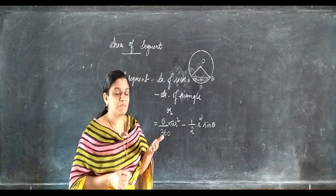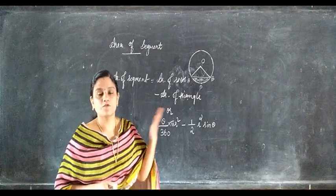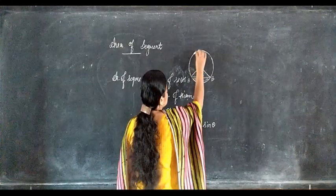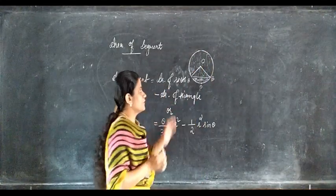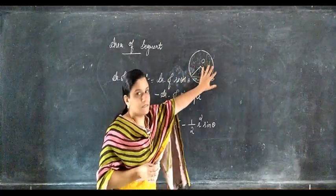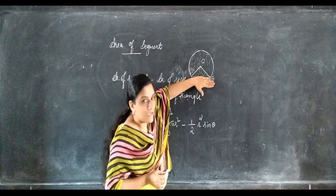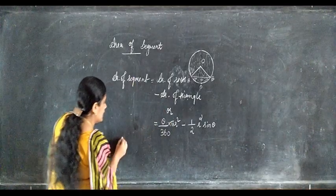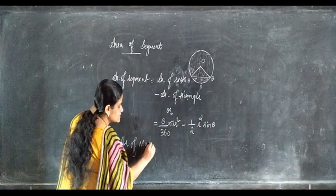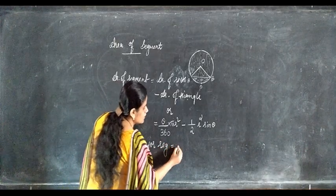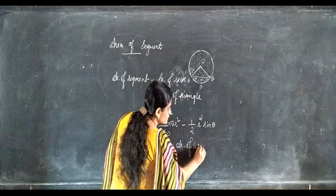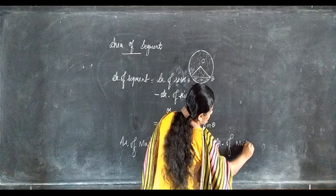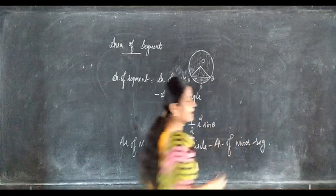When we say segment, it is the minor segment. Suppose we need to find the area of the major segment — from the entire circle, if we subtract the area of the minor segment, we get the area of the major segment. So, area of major segment equals area of circle minus area of minor segment.